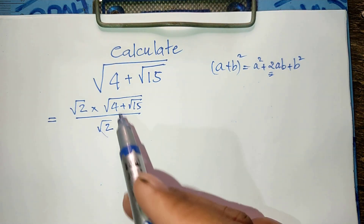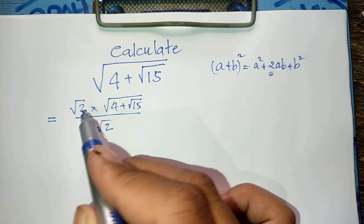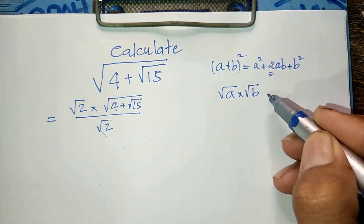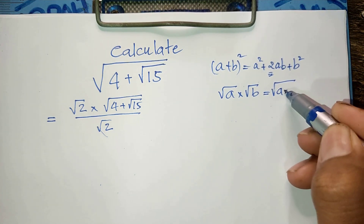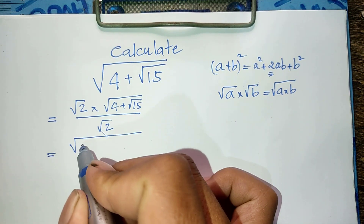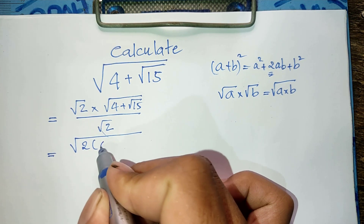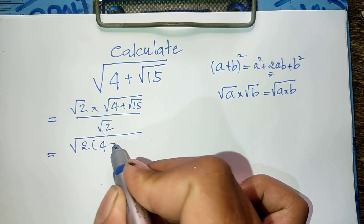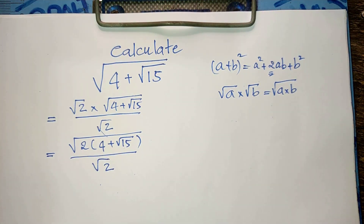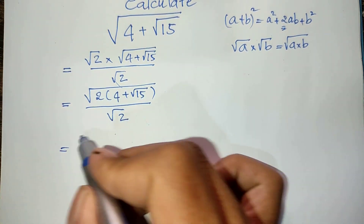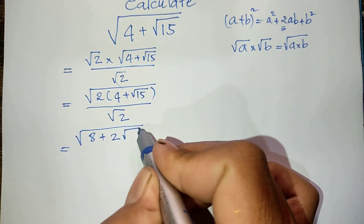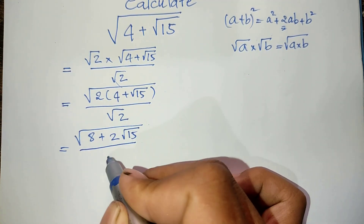Now we use the rule that square root of a times square root of b equals square root of (a times b). Applying this, we get square root of (8 + 2·square root of 15), divided by square root of 2.